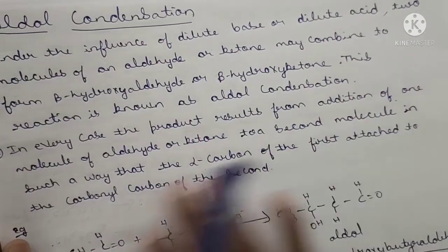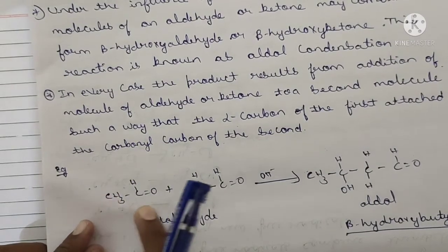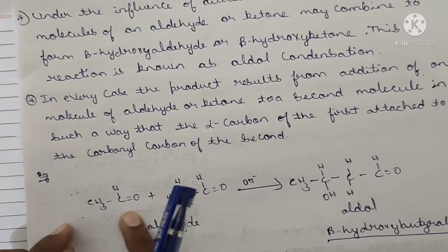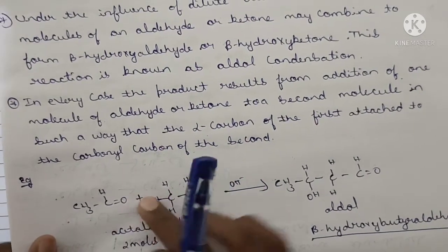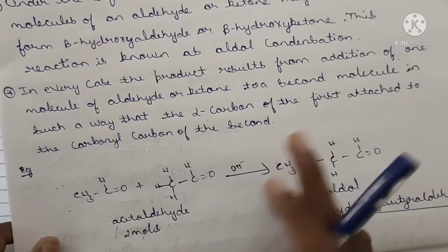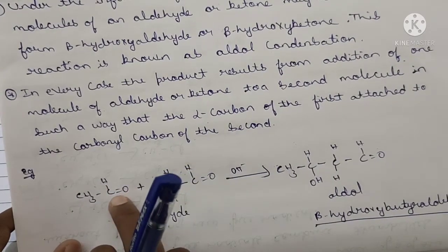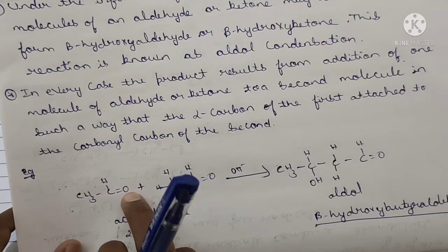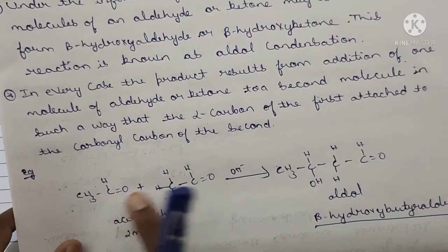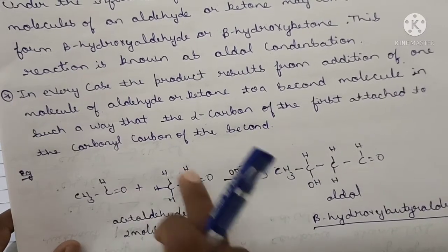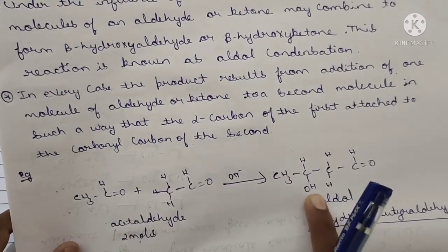One very important point: the product results from the addition of one molecule of aldehyde or ketone to a second molecule. That second molecule should contain the alpha carbon — the alpha carbon is the carbon adjacent to the carbonyl carbon, i.e., the side carbon next to the functional group. This alpha carbon attaches to the second carbonyl carbon. For example, in CH3CHO, this is the first carbonyl carbon and it contains one alpha carbon.